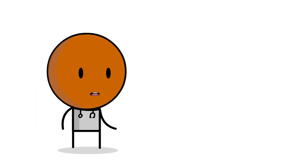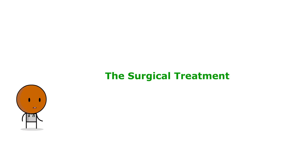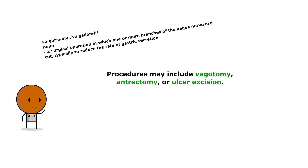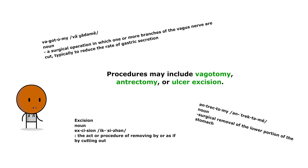Follow-up testing for eradication is important, especially in cases of complicated ulcers. Surgical intervention is considered in refractory cases or when complications such as perforation or uncontrolled bleeding occur. Procedures may include vagotomy, antrectomy, or ulcer excision.